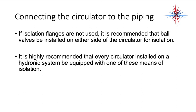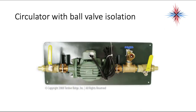If isolation flanges are not used, it's recommended that ball valves be installed on either side of the circulator. It's highly recommended that every circulator on a hydronic system be equipped with one of these means of isolation — either isolation flanges or ball valves. It's also often a good idea to include a drain valve.